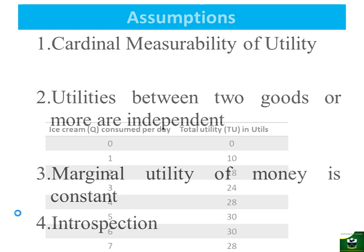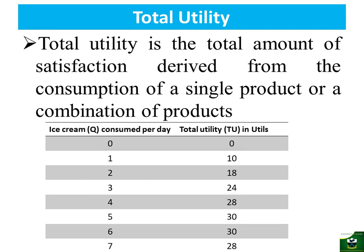Let's build the theory by looking at total utility. Total utility is the total amount of satisfaction derived from the consumption of a single product or a combination of products. Taking the case of ice cream, if no ice cream is consumed, total utility generated will be zero. If one unit is consumed, total utility will be 10. Adding units of ice cream consumed increases total utilities but at a diminishing rate, and beyond the sixth unit of ice cream, total utility declines. So total utility increases at a diminishing rate up to a certain point, then starts to decline.